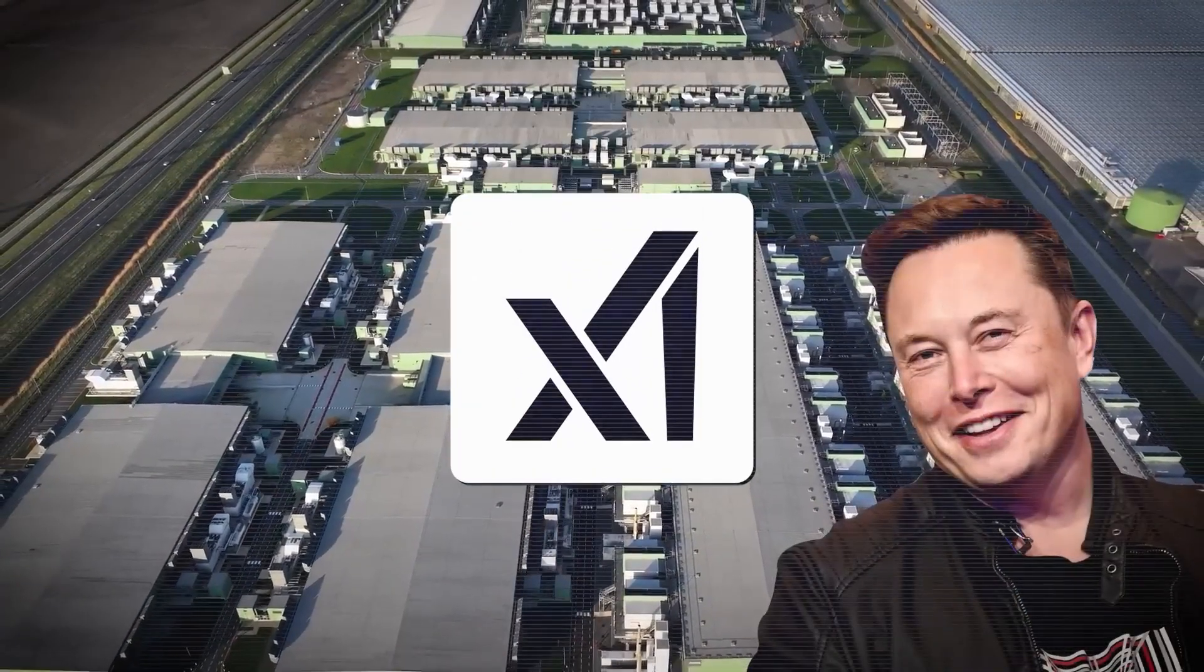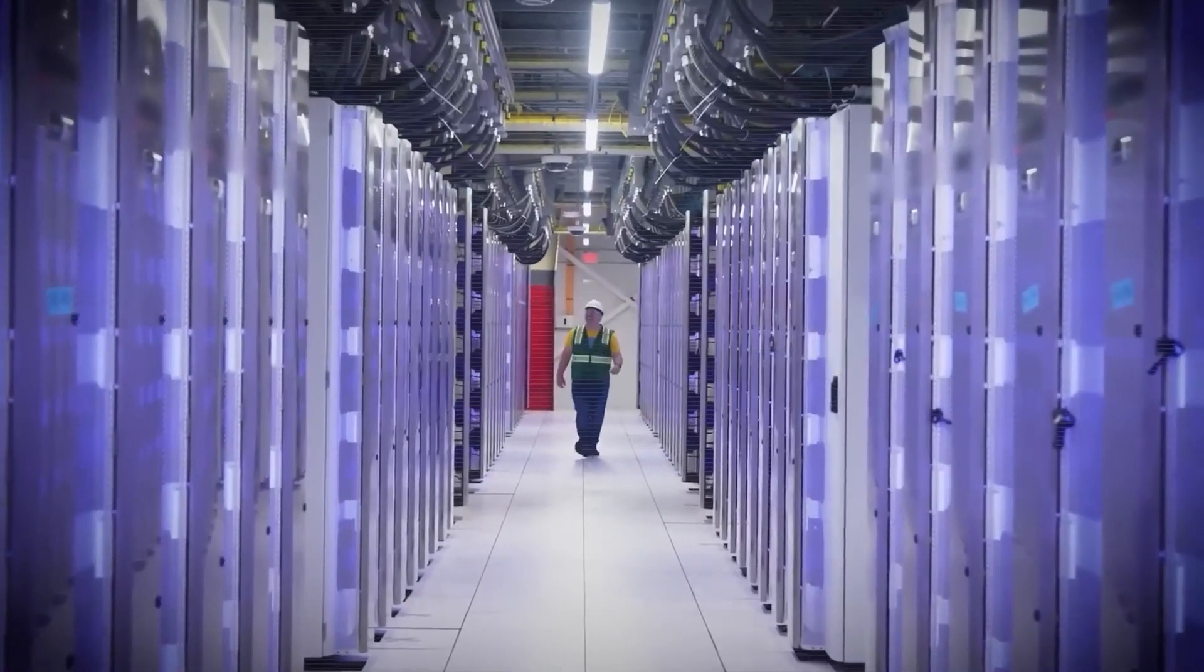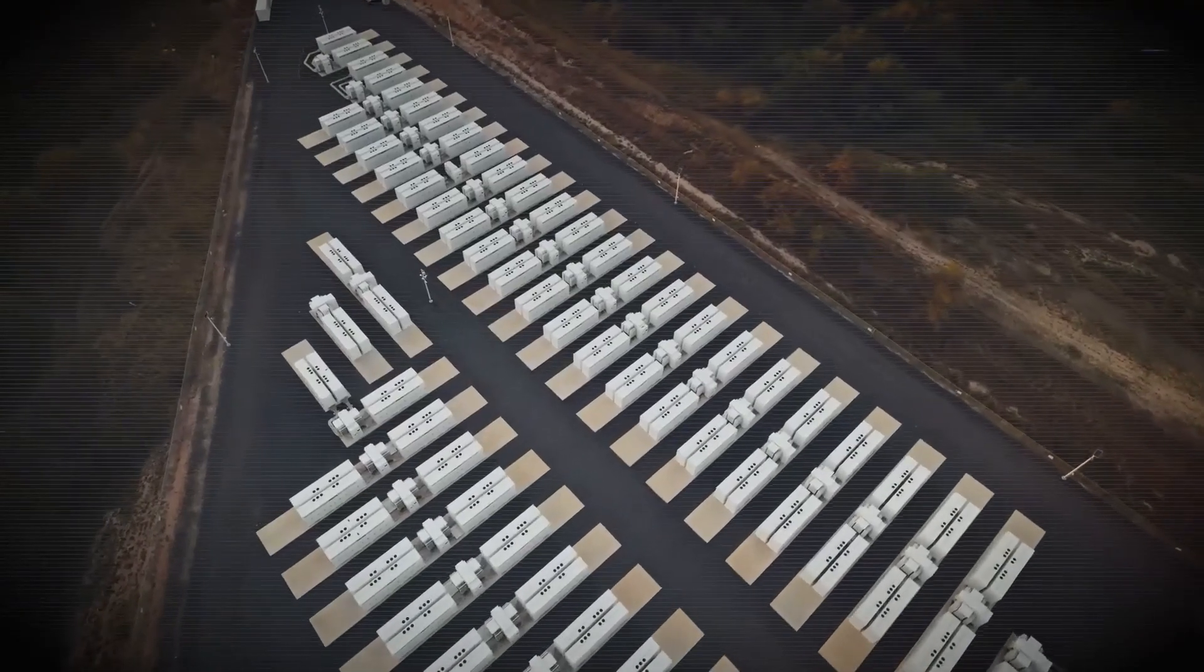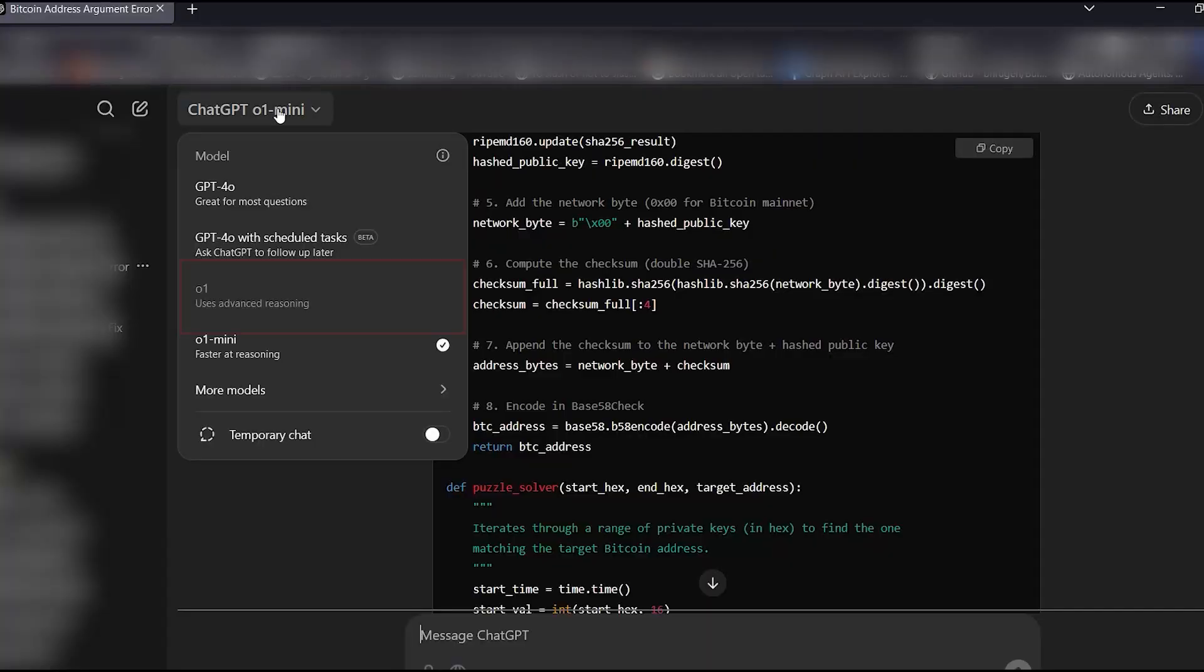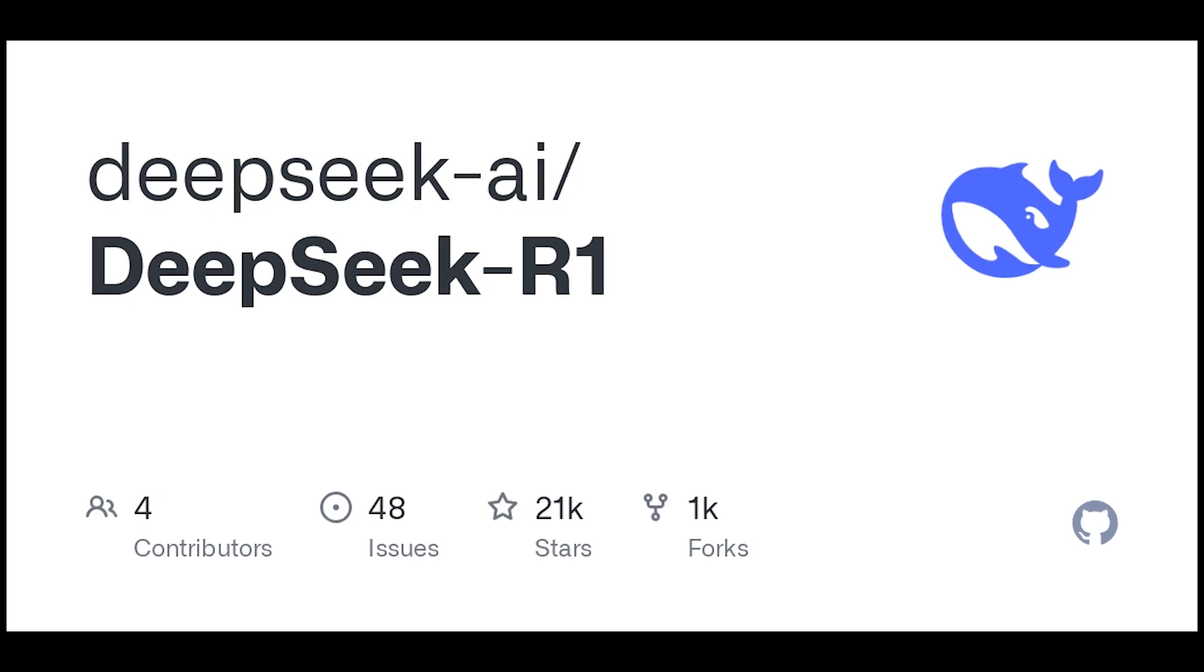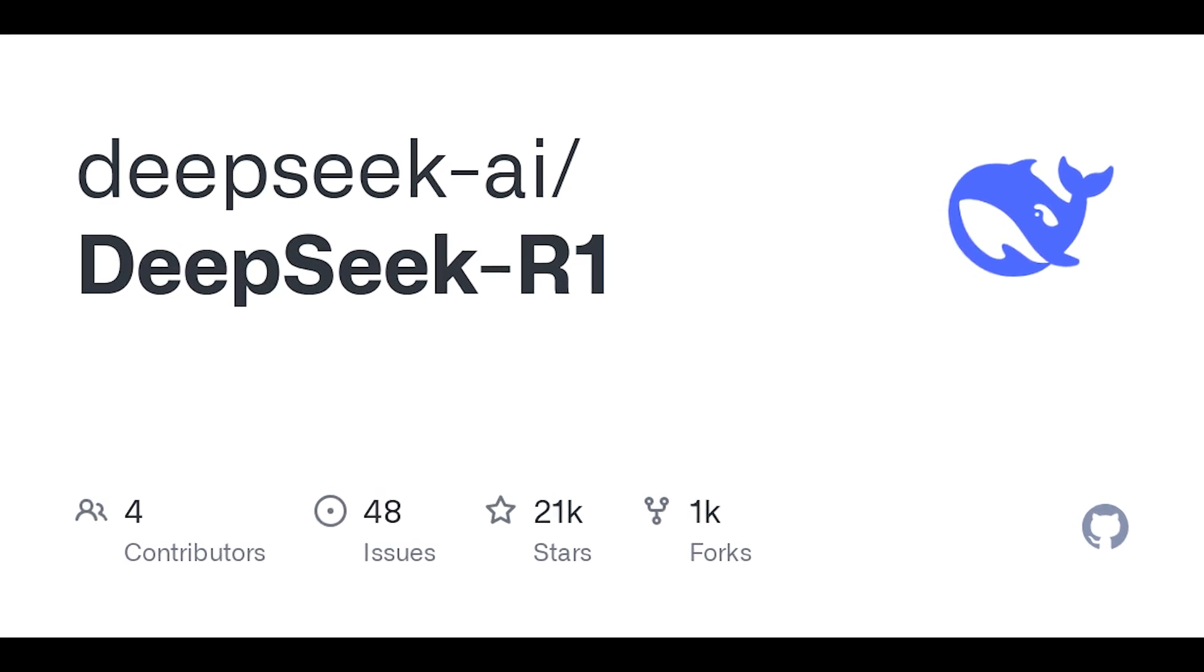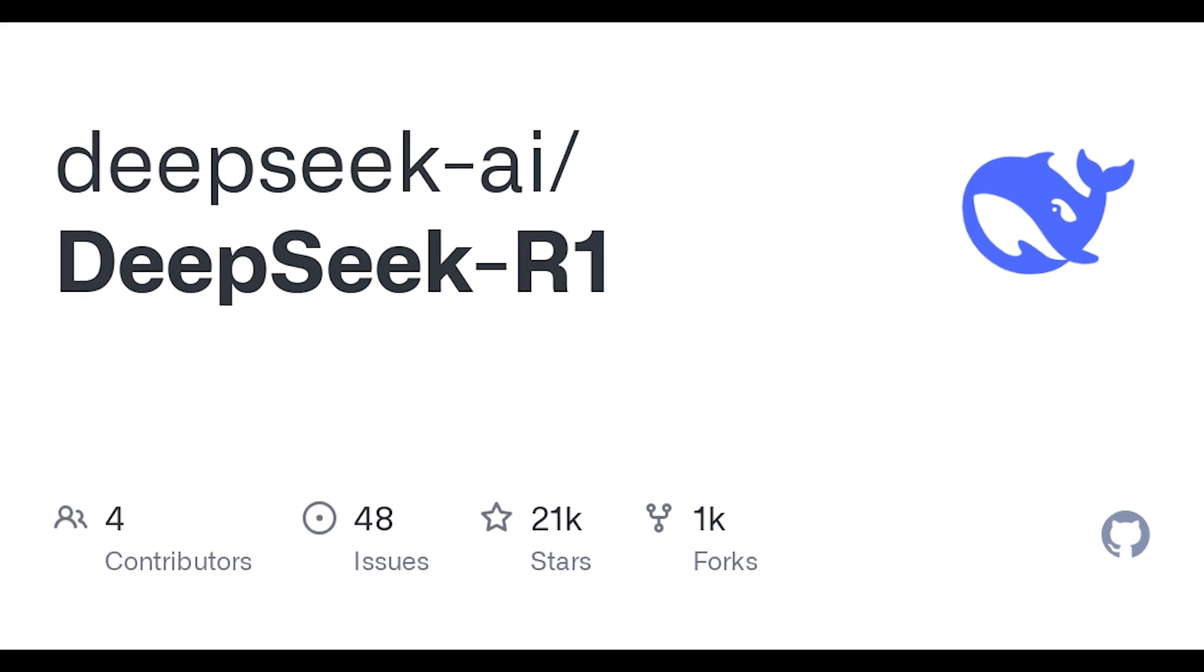Grok 3 is the long-awaited model from Elon's XAI and is the biggest trained AI model as far as we know. It is 10 times bigger than Grok 2, which was already a pretty decent model. O1 is the latest and most capable model from OpenAI available on ChatGPT Plus and Pro. And DeepSeek R1 is the Chinese model that supposedly reached O1 performance on a much smaller scale and lower cost.